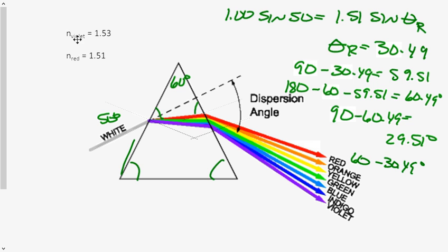All right, now let's handle the violet light. So we now know that our red light is incident upon this side at 29.51 degrees. Let's do our violet light, and we'll do it down here.